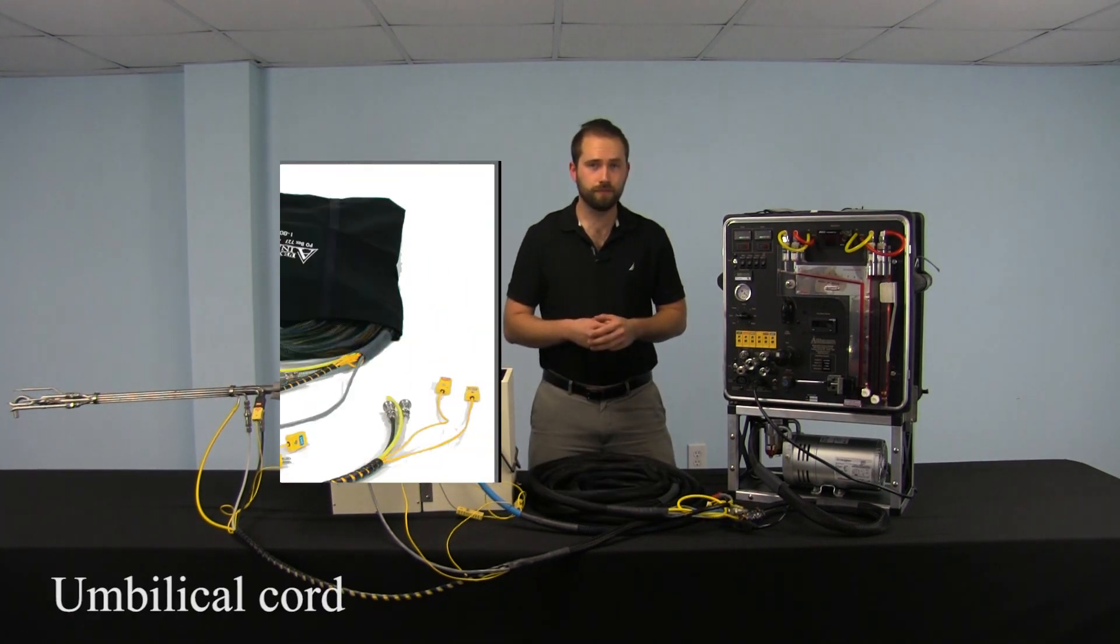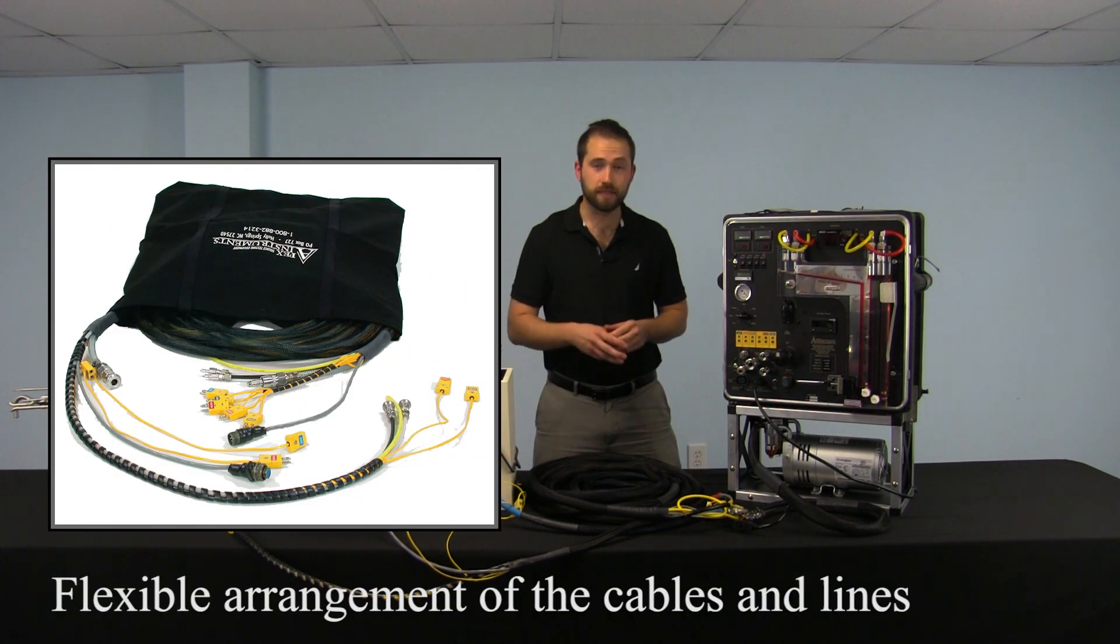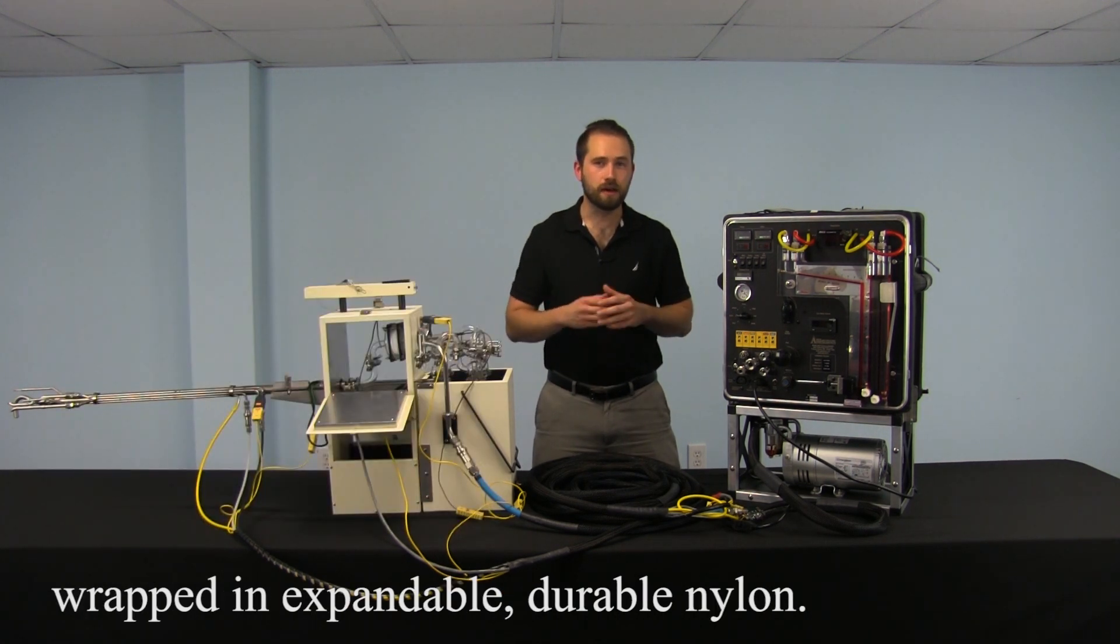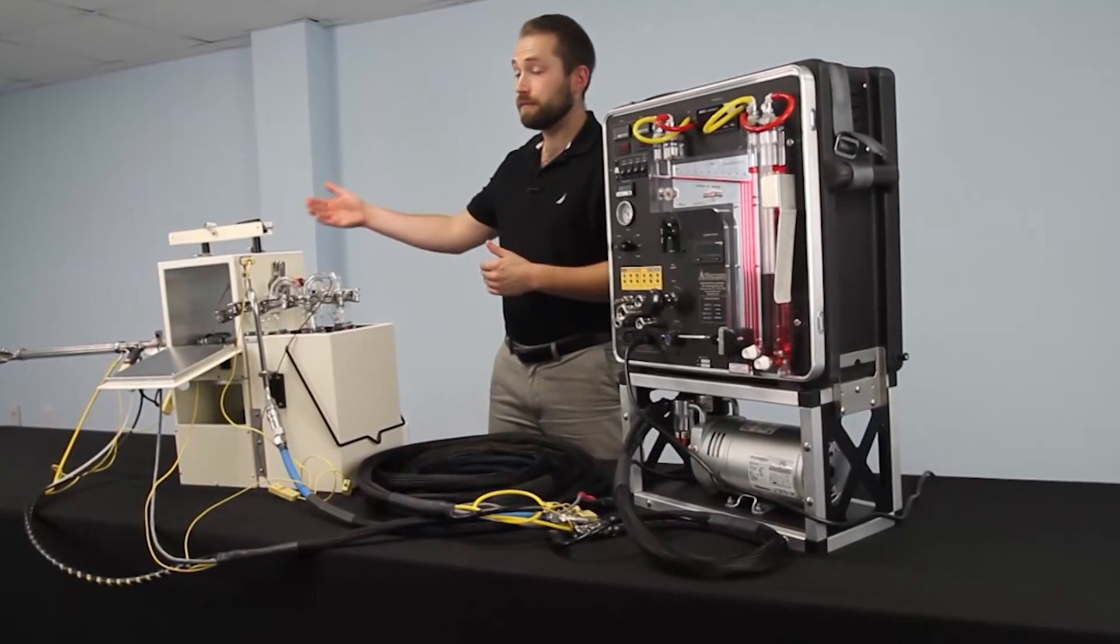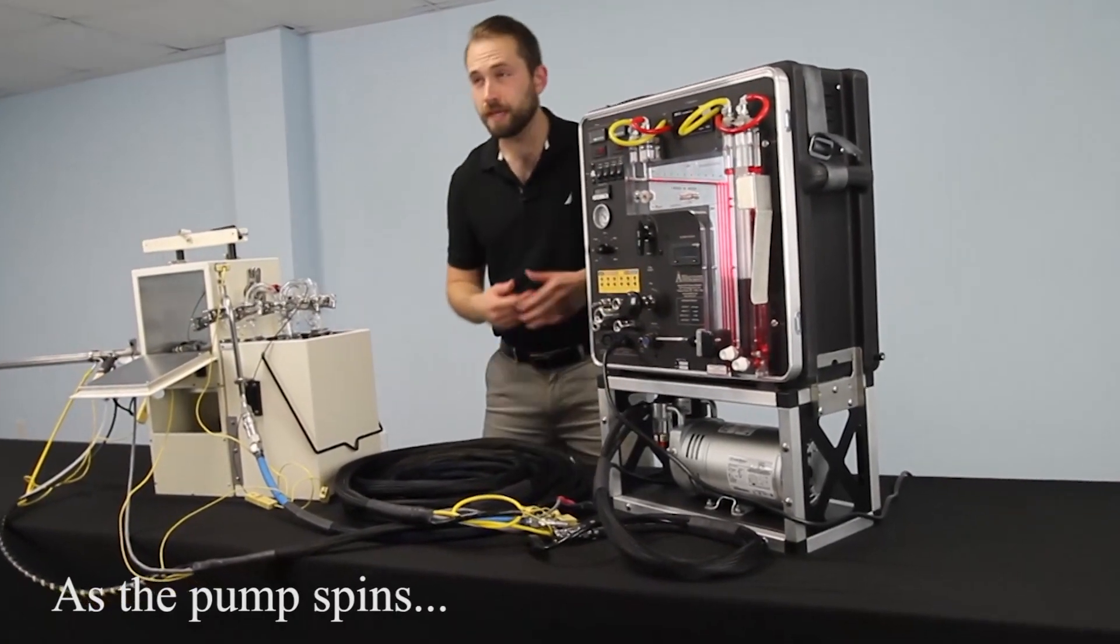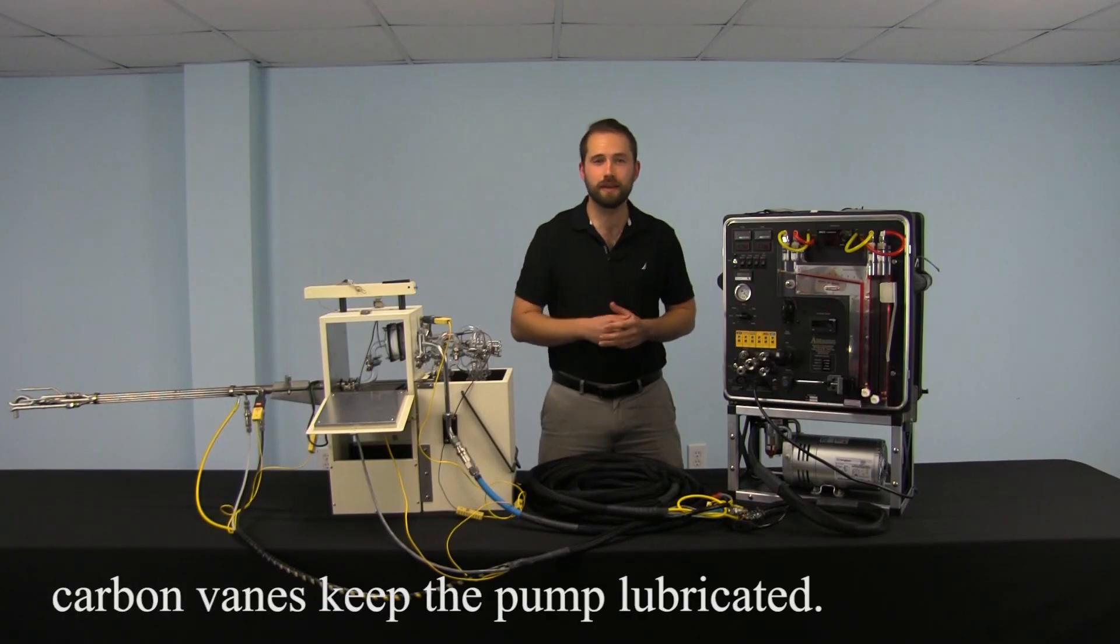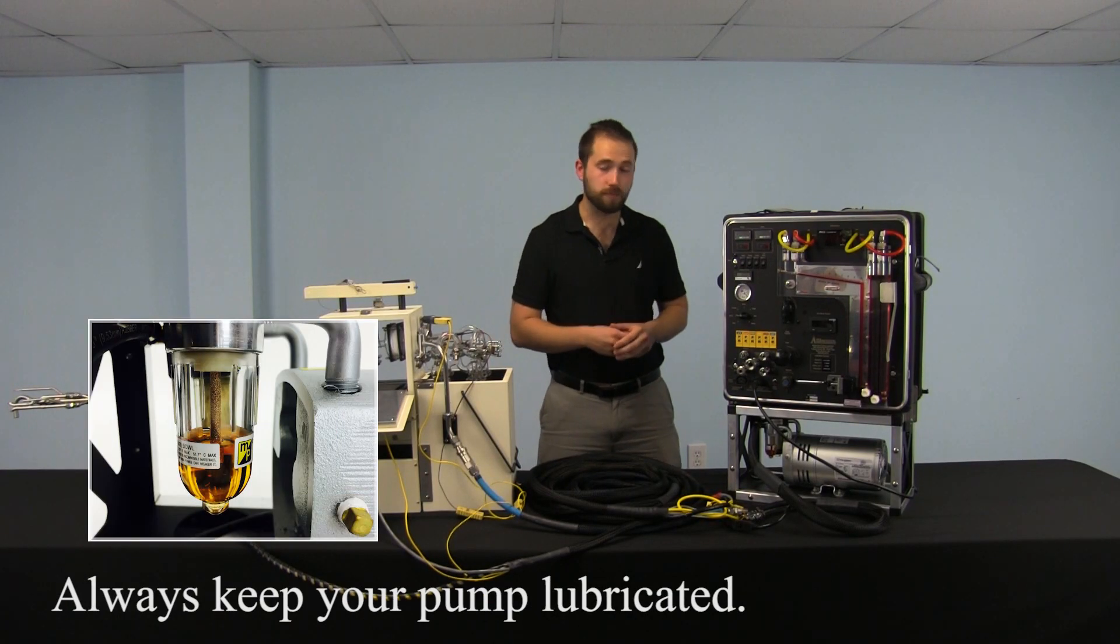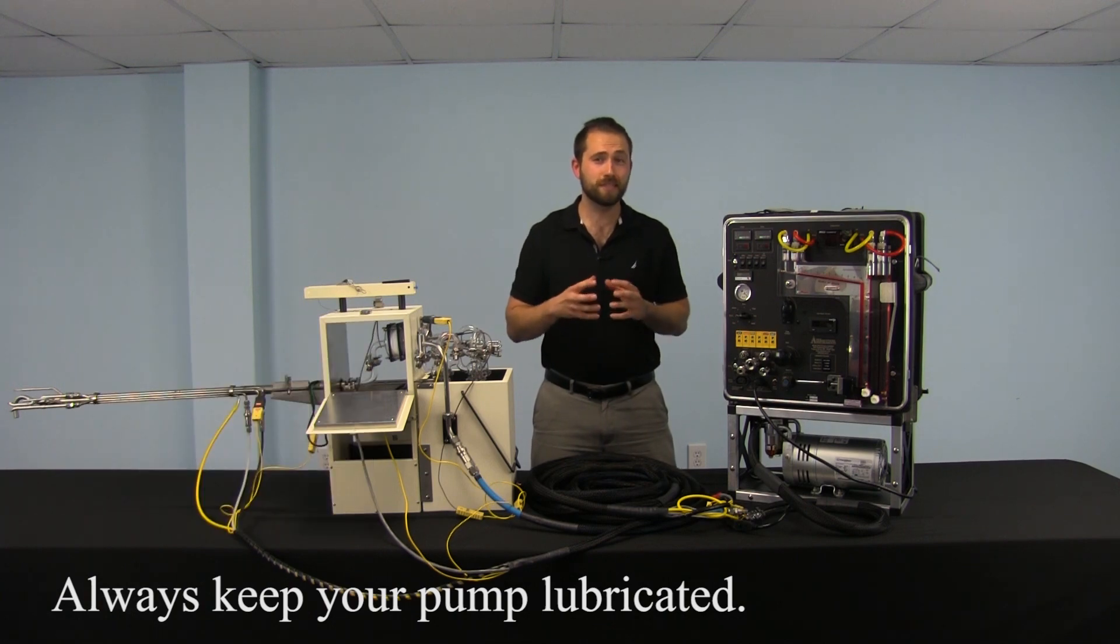Next we have the umbilical cord, which is a flexible arrangement of all the cables and lines wrapped in expandable durable nylon. The pump that we use to pull the air from the source is a rotary vein pump. And as this section right here spins, it uses little carbon veins to keep itself lubricated. You always want to make sure to keep your pump lubricated, otherwise it will eventually seize.